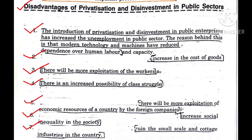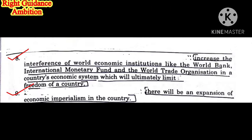Seventh, privatization will ruin small scale and cottage industries in the country, especially in villages and rural areas, as private owners will merge or eliminate them. Eighth, it will increase the interference of world economic institutions like the World Bank, International Monetary Fund, and World Trade Organization in the country's economic system, which will ultimately limit the freedom of the country. International organizations will make rules, regulations, and treaties that will affect our economic sovereignty — how much tax we impose and how we manage our economy.